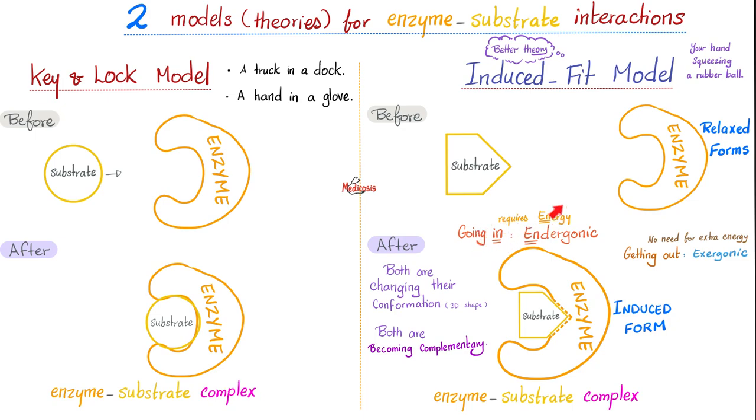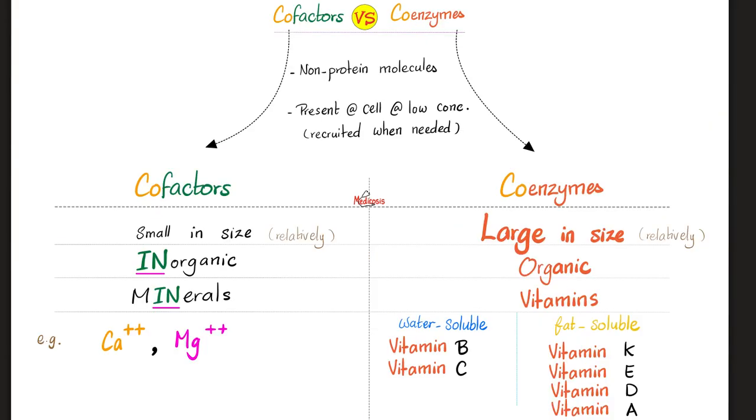But when the substrate is going out, i.e., leaving the enzyme, there is no need for extra energy, therefore, it's an exergonic reaction. It is true that chemical reactions may require catalysts known as enzymes.